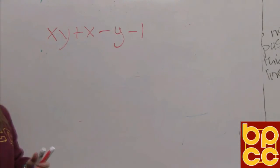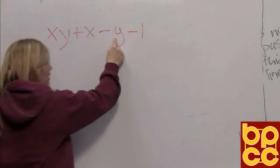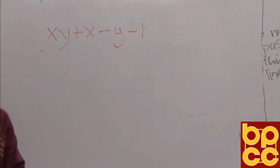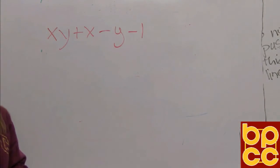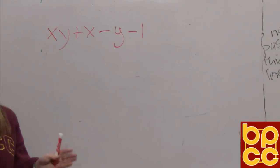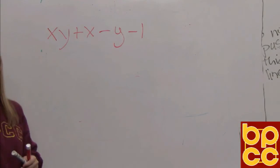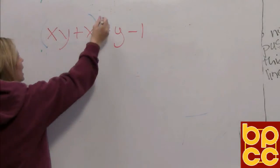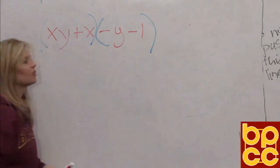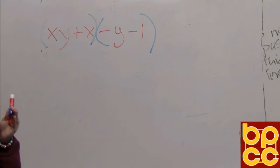Okay, the first rule of factoring is to see if they all have something in common, which they do not. They all don't have x's, all those terms don't have y's, so we can't do the GCF rule. But what we're going to do is we're going to group them. We're going to group the first two and the last two to see if the smaller groups have something in common.